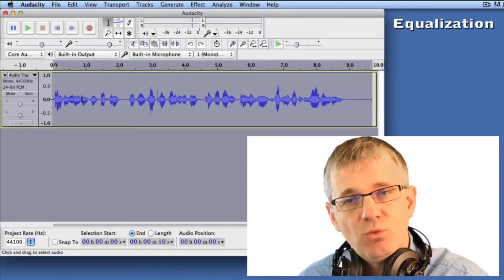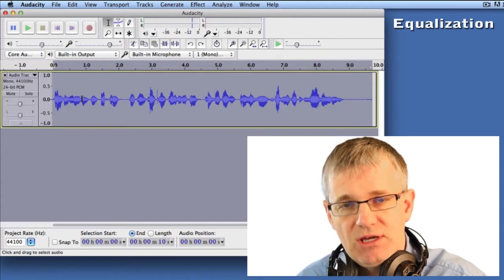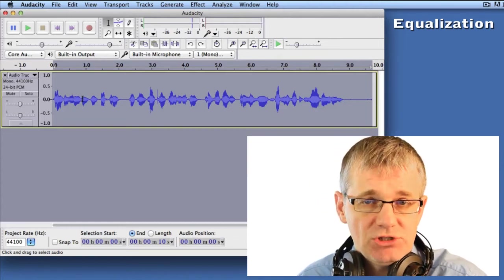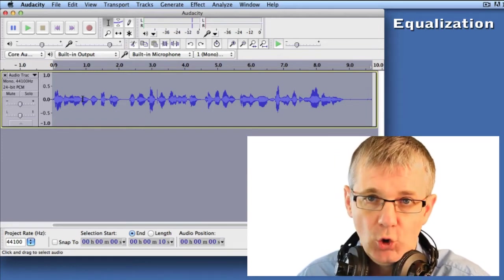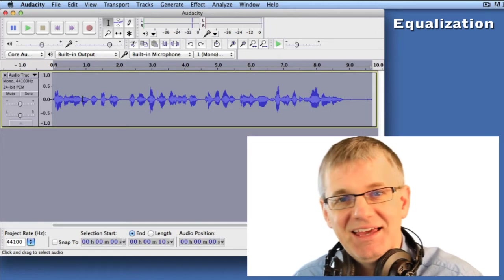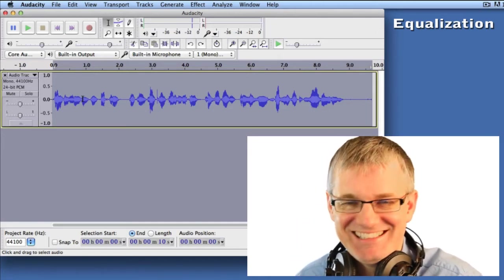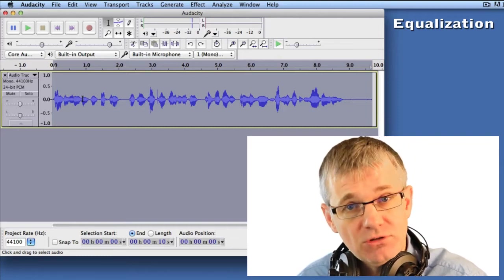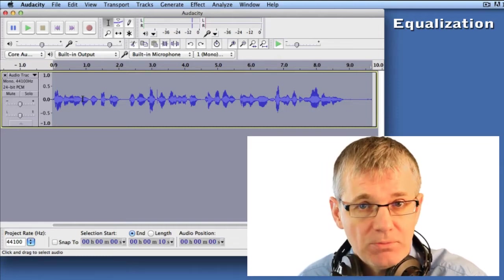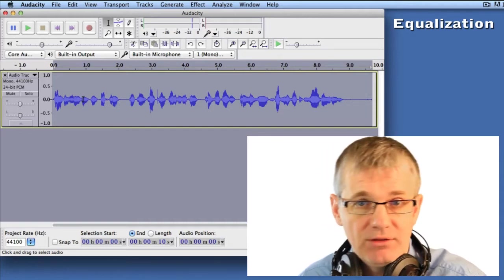Equalization is when we change the frequency ranges of our recordings. Frequency ranges - I mean pitches or highs and lows. For example, a bass would be a low frequency, and a really high pitch would be high frequencies. Sometimes you may want to boost the highs, the lows, or any part of the frequency range. And sometimes you may want to reduce that part of the frequency range.